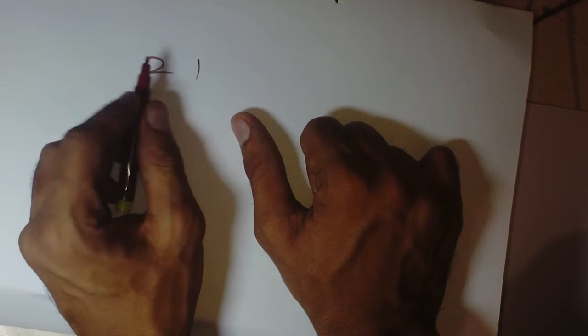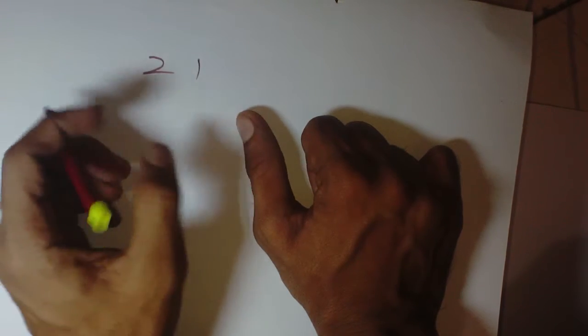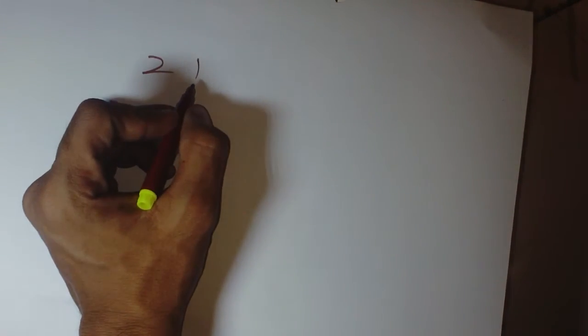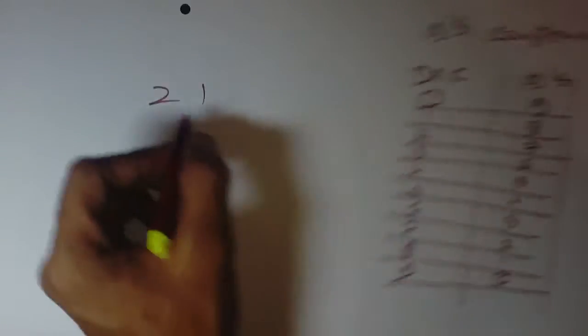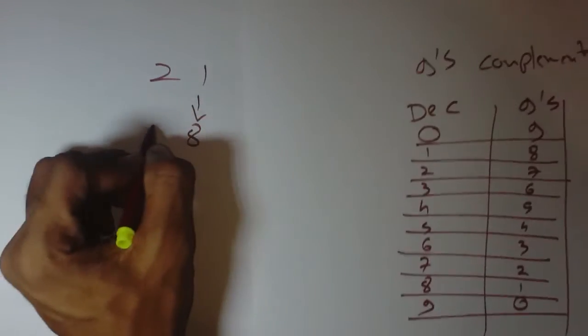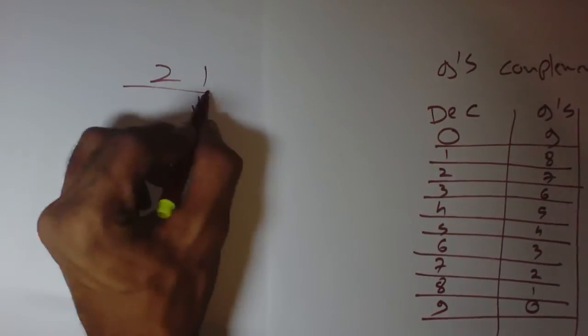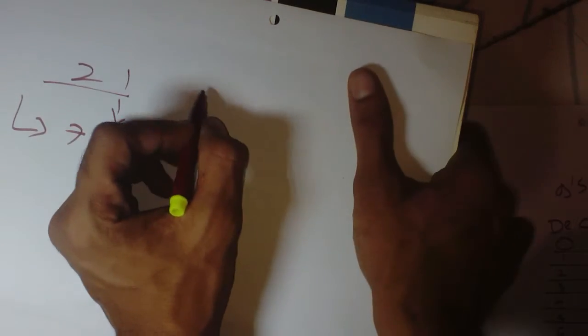have to calculate the nine's complement for each digit. So nine's complement for this 1 is, we know, 8, and for 2 is 7. So for this value, nine's complement will be 78. So if there is a bigger